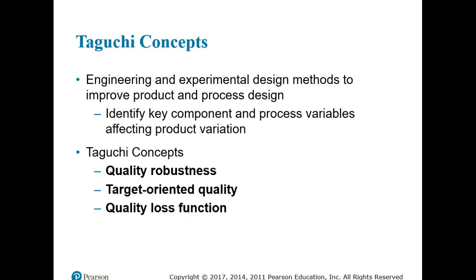Genichi Taguchi created systematic methods to design experiments — fractional factorial experiments — that identify variables affecting product variation. He provided three important concepts: (1) Quality robustness — products consistently built to meet customer needs despite adverse conditions in the production process; (2) Target-oriented quality — a philosophy of continuous improvement to bring a product exactly on target; and (3) The Quality Loss Function (QLF) — a mathematical function that identifies all costs connected with poor quality and shows how these costs increase as output moves away from the target value.